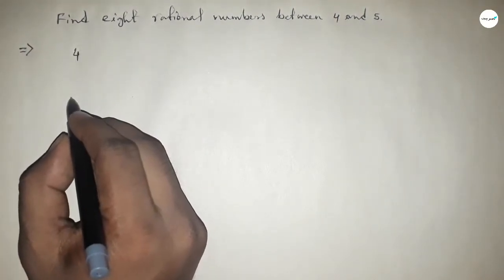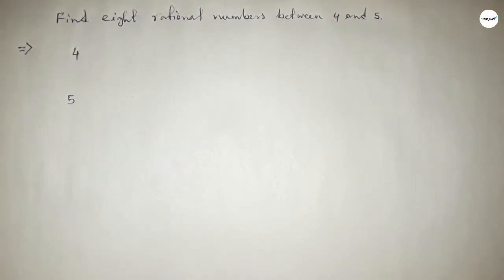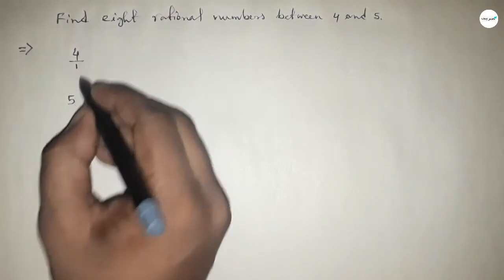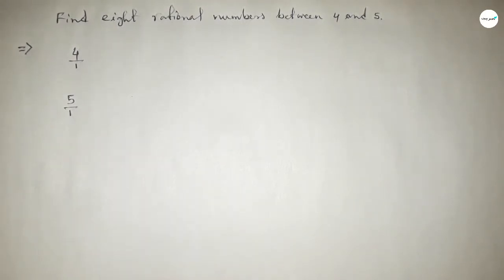First of all, write down here the given numbers 4 and 5. Then we can write 4 as 4 over 1 and 5 as 5 over 1.